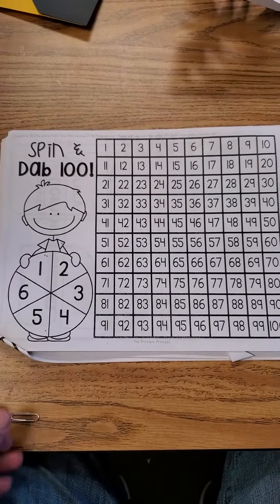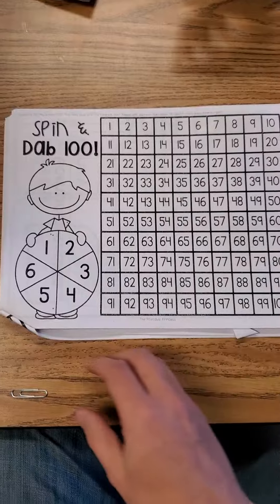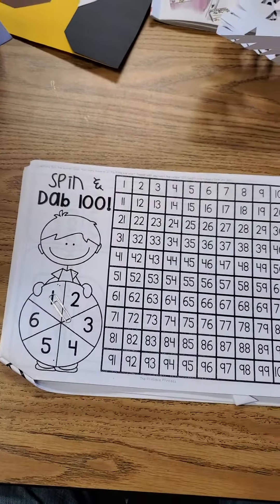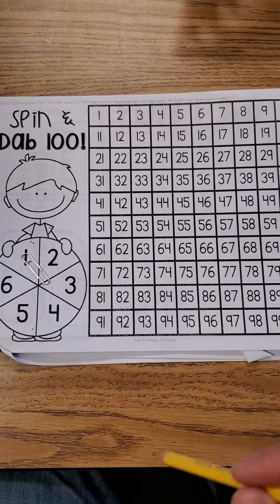Alright, so for Spin and Dab to 100, what you need is a paper clip, a pencil, and some markers or crayons.